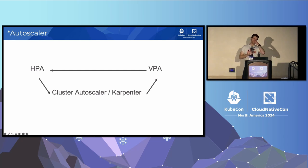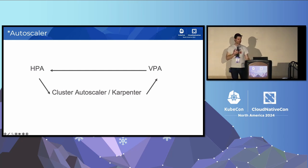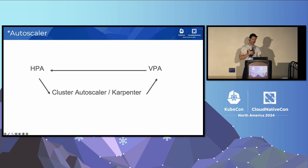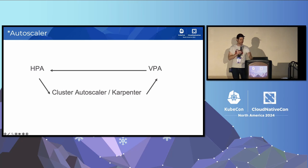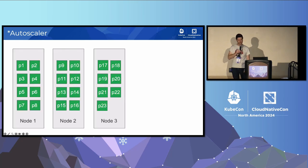The reason there are all these projects isn't because you choose one or the other, but because they each solve a discrete part of the overall problem set. HPA plus VPA plus Cluster Autoscaler or Karpenter all work together to make your cluster more dynamic and optimally operational at all times.